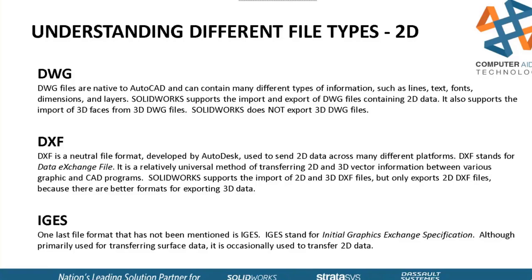SolidWorks does not export to a 3D DWG. DXF is pretty common — it was developed by Autodesk and is strictly 2D information. I'll show you how we can pull DXF into SolidWorks in a few different ways. IGES — Initial Graphics Exchange Specifications — is the last one I wanted to mention in 2D. These are used mostly for transferring surface data. So those are your three basic files for 2D.